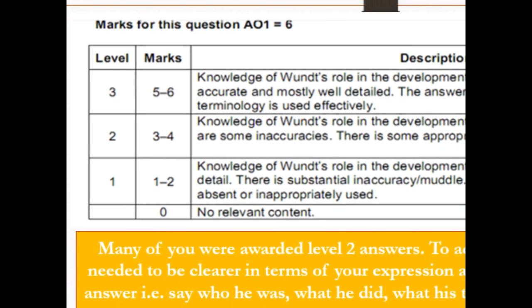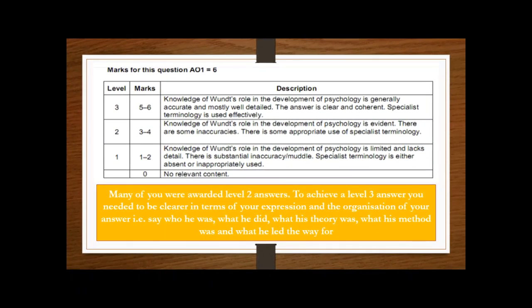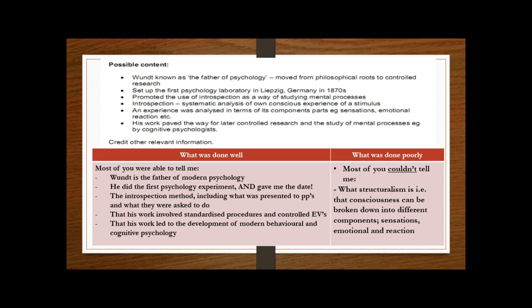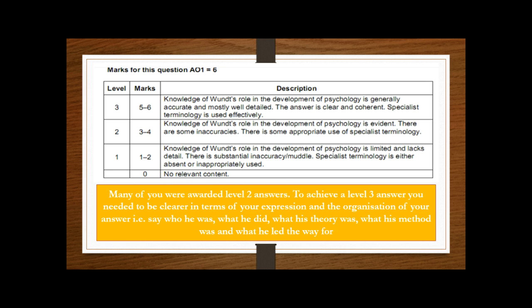If we just look at the mark scheme, I could say it's pretty lenient here. Most of you are in this middle level, so knowledge of Wundt's role is evident, there's some inaccuracies, and there's some use of specialist terminology. But on the whole, pretty good. I have to say I was absolutely chuffed to bits with how many of you got up to level three. Your answer was clear, it was coherent, it was concise. I was given six marks for a lot of people who, if you read it back to yourself, were writing kind of eight to ten lines and it was all in there. So really, really well done on this first question. Annotate your answer accordingly using the terminology from the mark bands and the previous material of what you did well and what was missing.